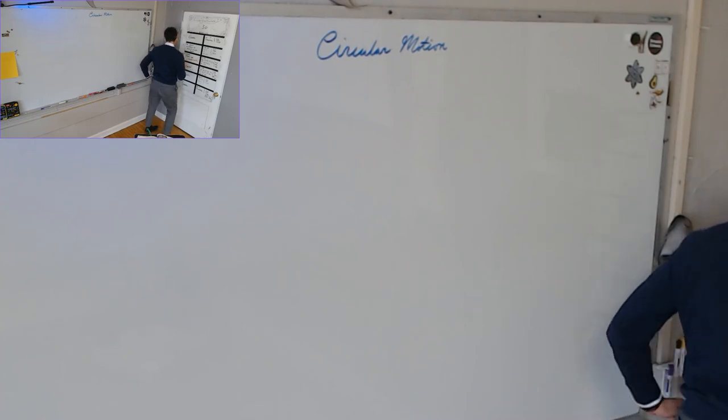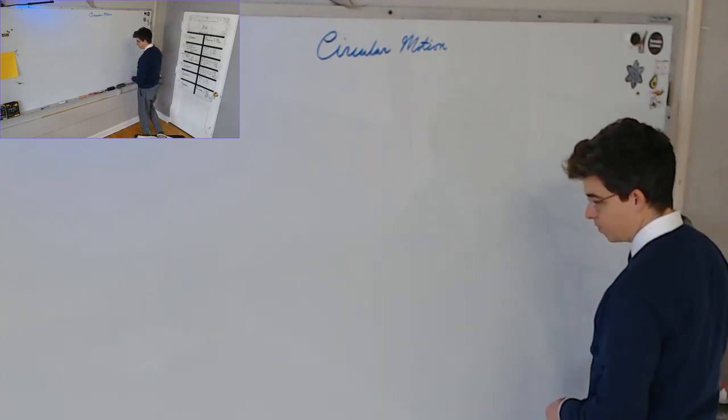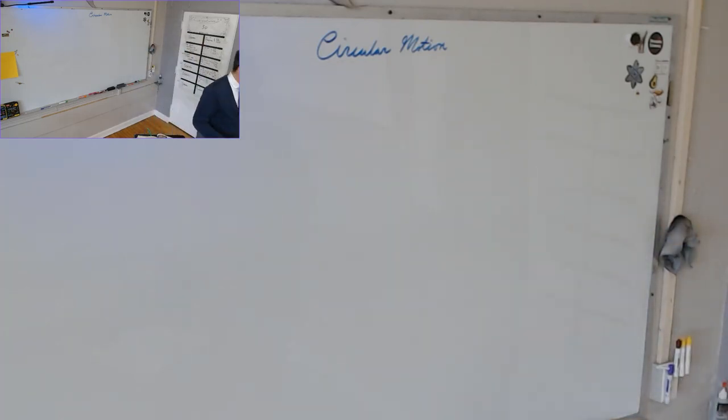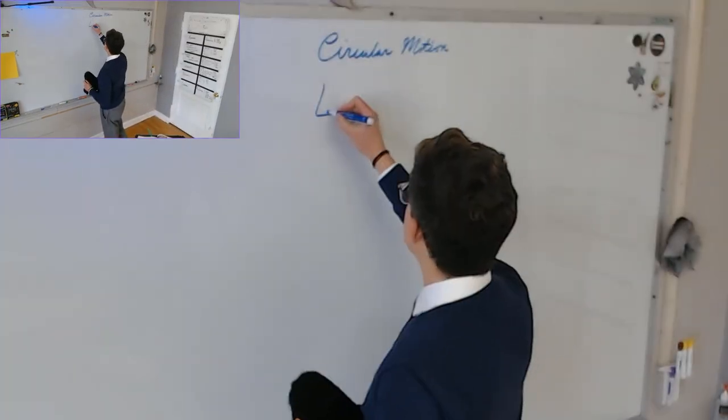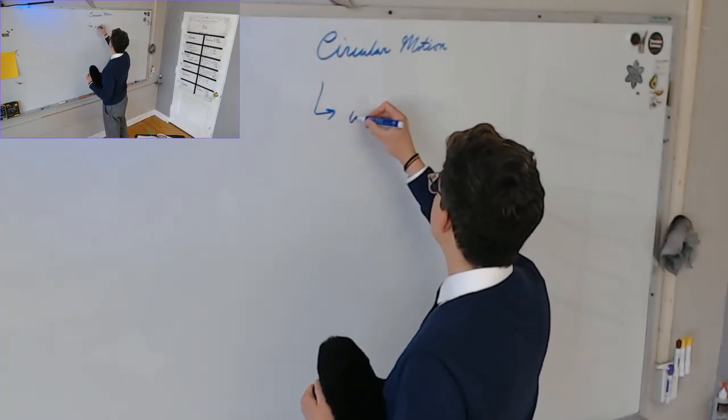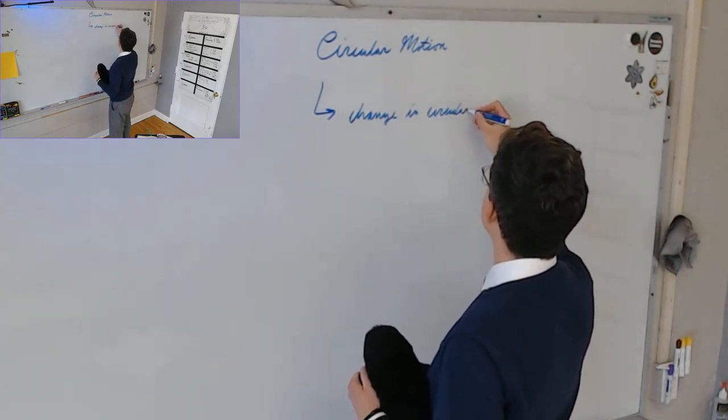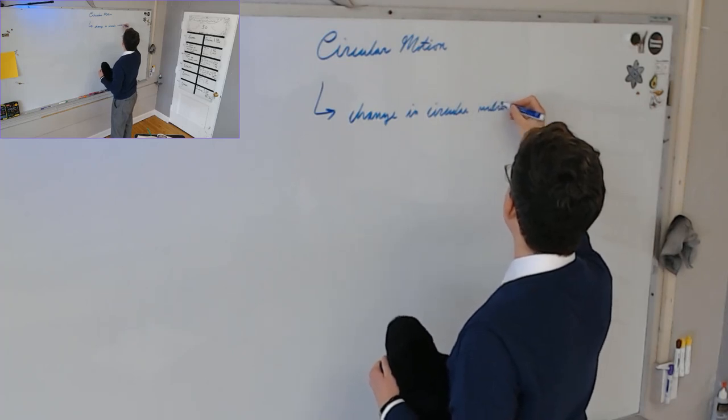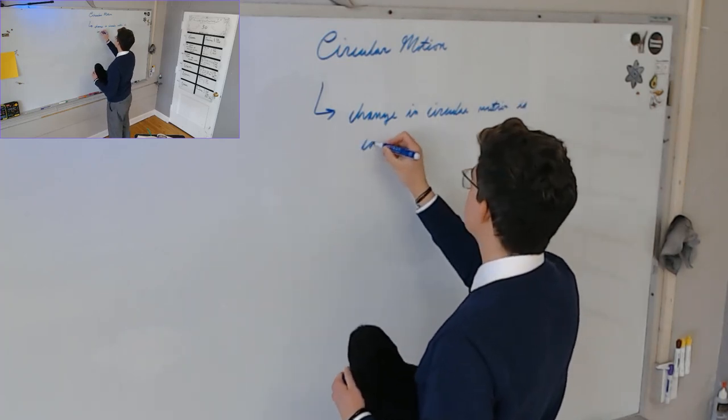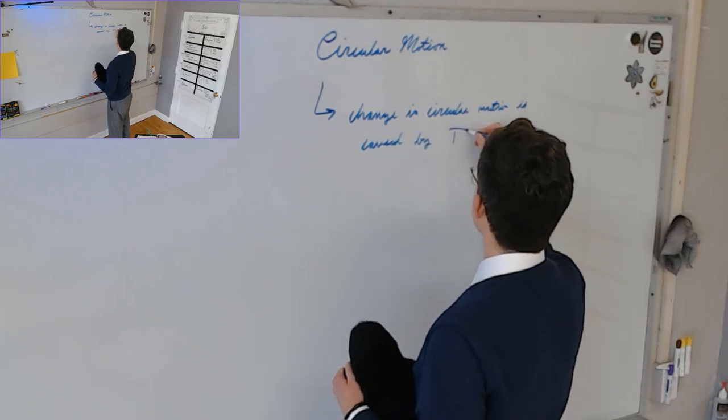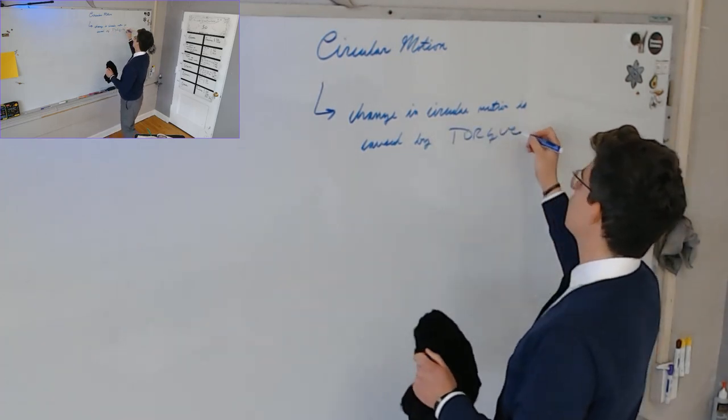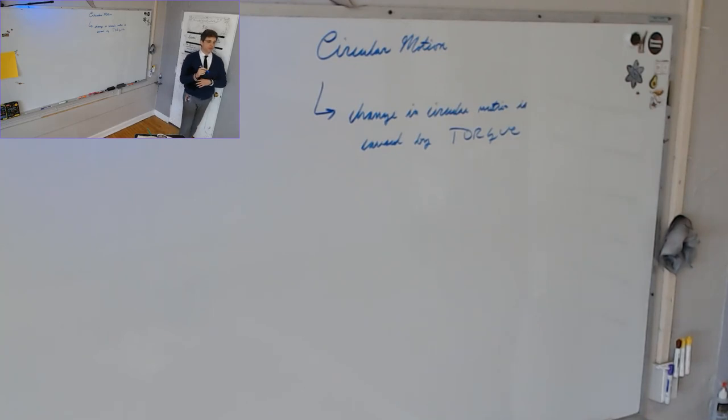This is a really, actually fairly easy objective to satisfy because in the same way that forces cause a change in linear motion, torque causes a change in circular motion. Change in circular motion is caused by torque. So a torque you can think of almost like a force that is making something, instead of changing its linear motion, its motion in a line, it's changing its circular motion. It's changing its, well, what is circular motion?